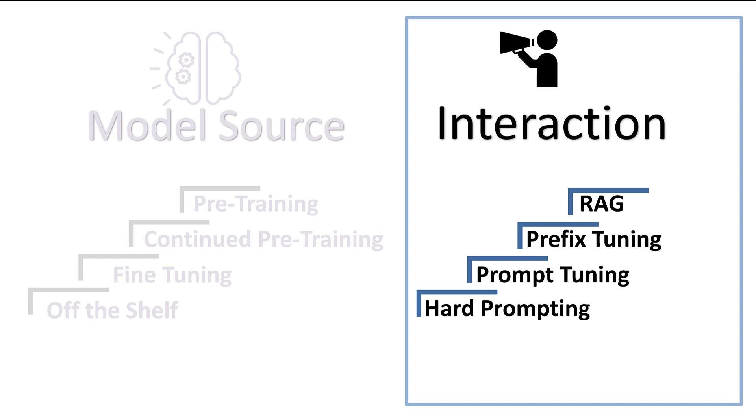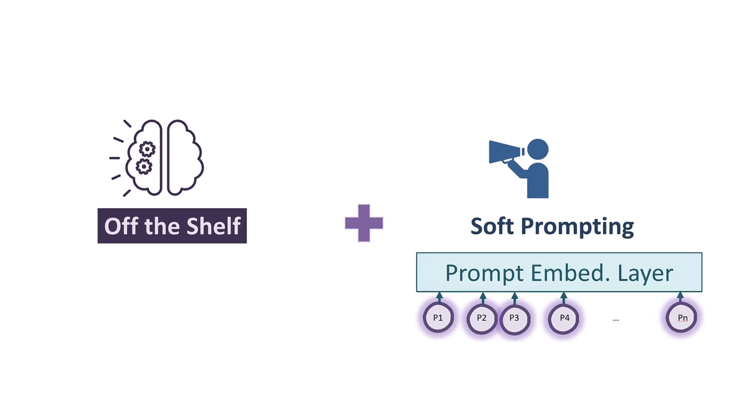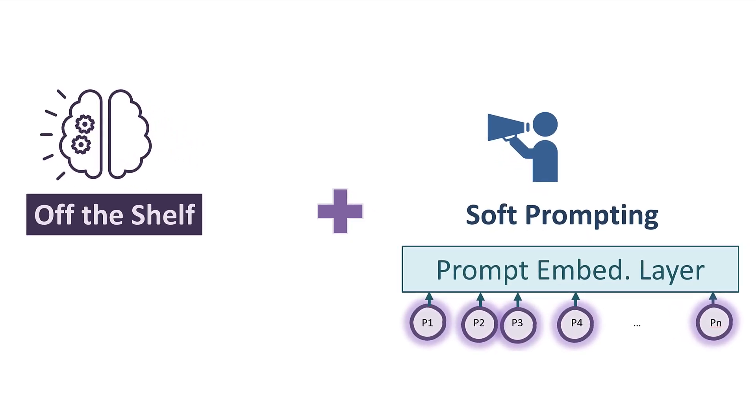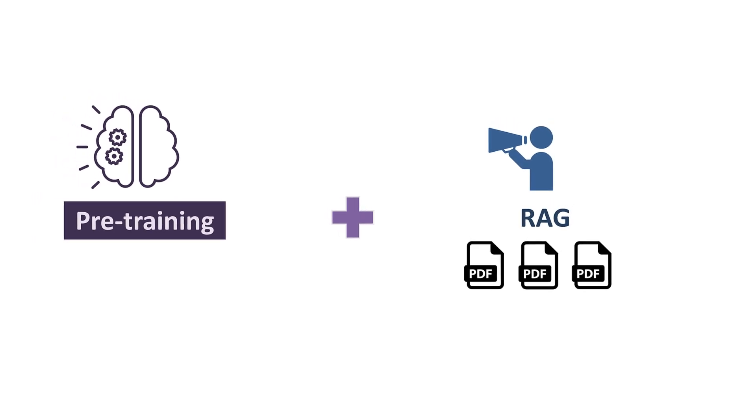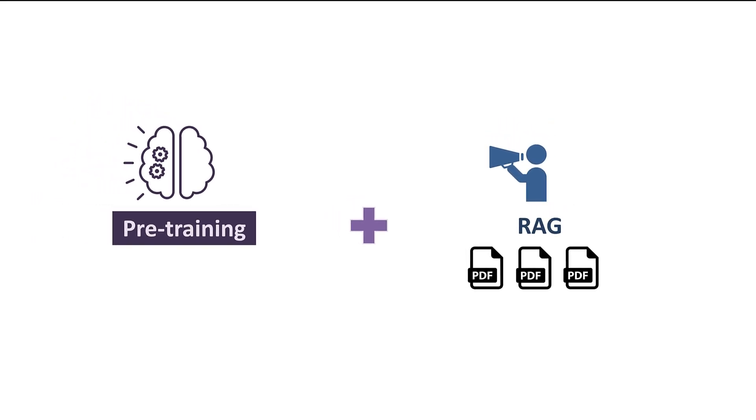You can also improve the interaction with the model. We know that very well because you're using prompt engineering for a while, and that's actually hard prompting. Today I'm going to talk about prompt tuning and prefix tuning. And if you have internal documents, you can just go ahead and use RAG, which is retrieval augmented generation. For example, an off-the-shelf model combined with soft prompting can get very good results, or you can pretrain your model completely from scratch and add to it some internal documents using RAG.